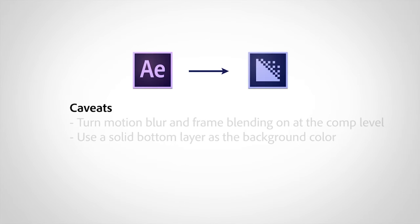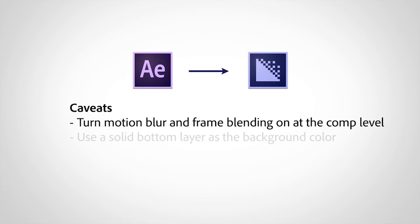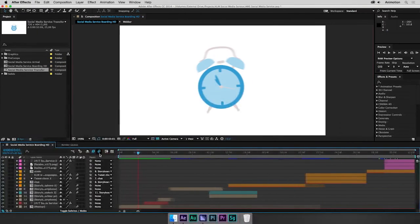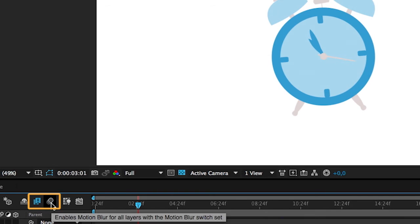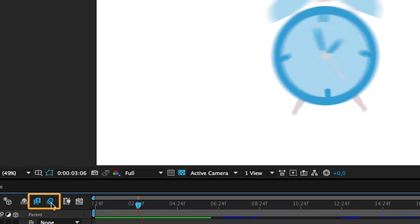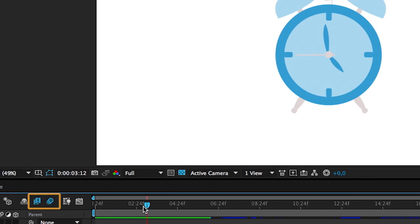Before you go and try this yourself, I want to point out two caveats regarding rendering After Effects compositions in Adobe Media Encoder. First, Media Encoder renders in a what-you-see-is-what-you-get way, meaning that features like motion blur and frame blending must be switched on at the comp level. There is no way to switch them on once they are in Media Encoder's queue.